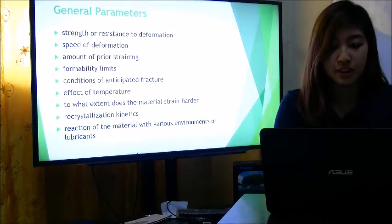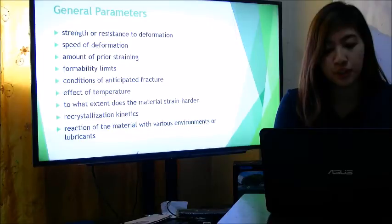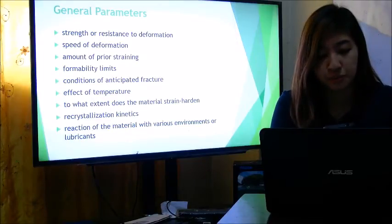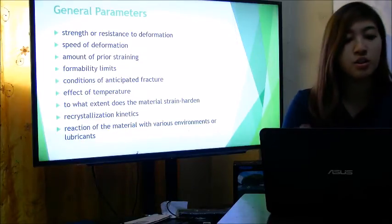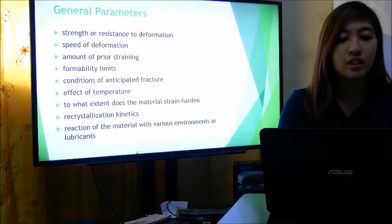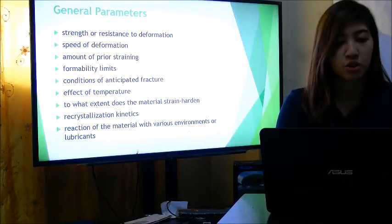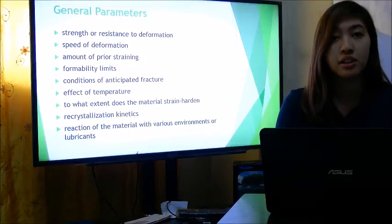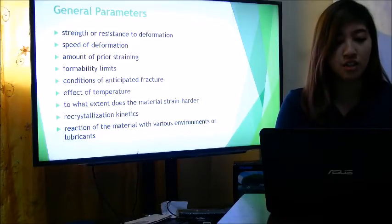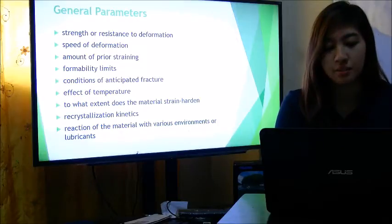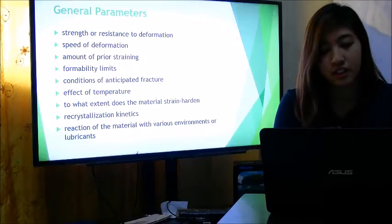The general parameters require characterizing the material being deformed. This includes the strength or resistance to deformation, the speed of deformation, amount of prior straining, formability limits, conditions of anticipated fracture, the effect of temperature, the extent to which the material strain hardens, crystallization kinetics, and the reaction of the material with various environments and lubricants. Another general parameter is the speed of deformation and its related effects; for speed-sensitive materials, more energy is needed to produce the same result at higher speeds, and stronger tools may be required.